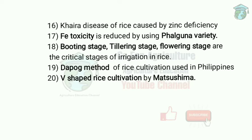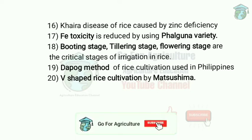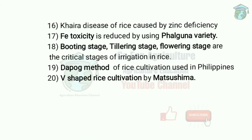Iron (Fe) toxicity is a major problem in rice, and it is reduced by using the Bulguna variety. Next, the critical stages of irrigation in rice are the booting stage, tillering stage, and flowering stage. Tillering stage is 0 to 20 days after sowing, and flowering stage is 40 to 60 days after sowing.